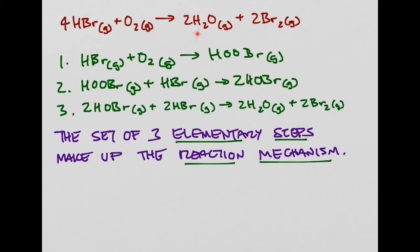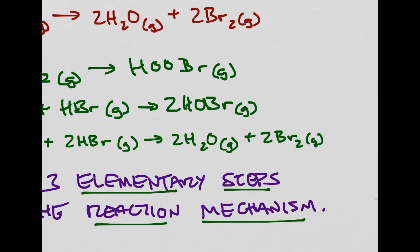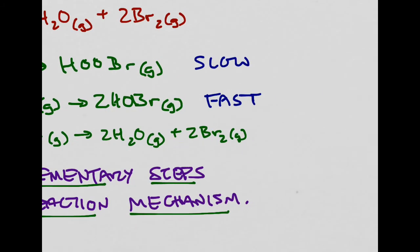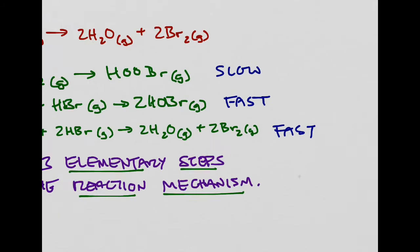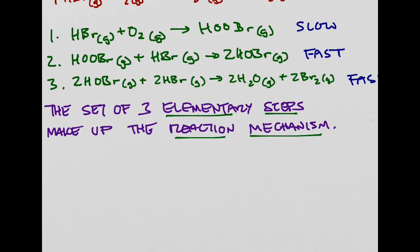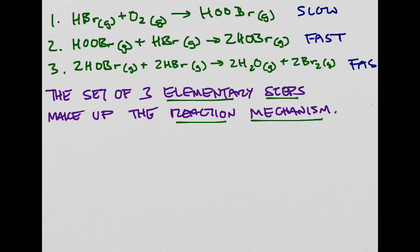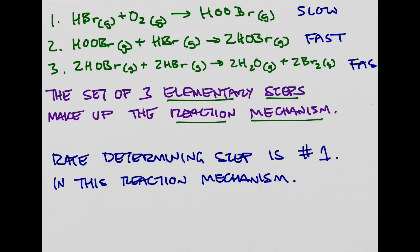These three elementary steps don't take place at the same rate. The first step is actually a fairly slow reaction, whereas the last two are much faster. That means one of these elementary steps in our reaction mechanism is going to be what's called the rate-determining step. In this case, step one — the first elementary step — is the rate-determining step for the whole reaction mechanism.